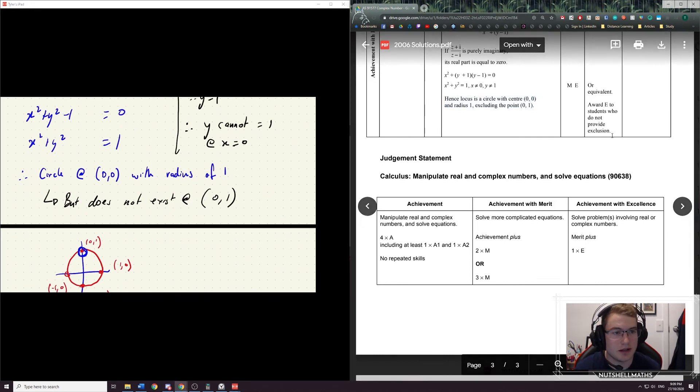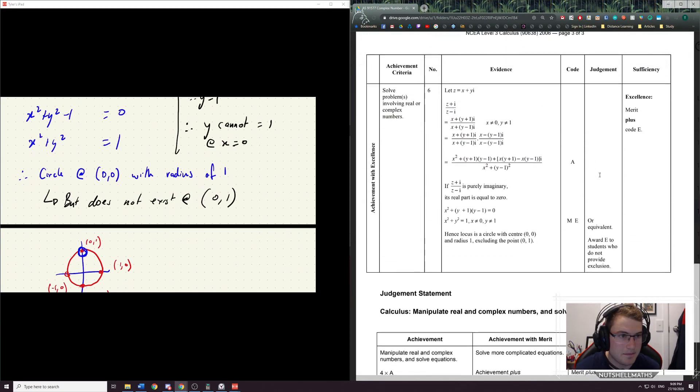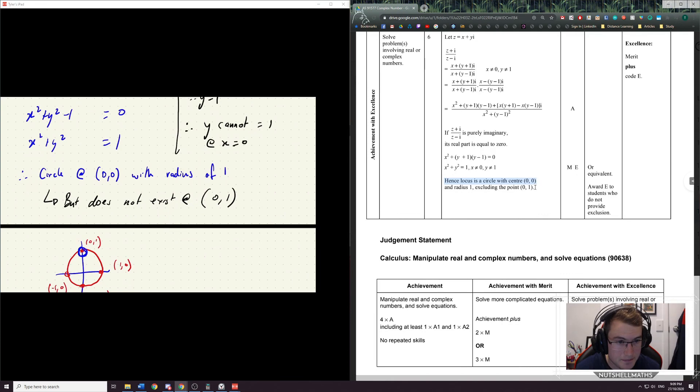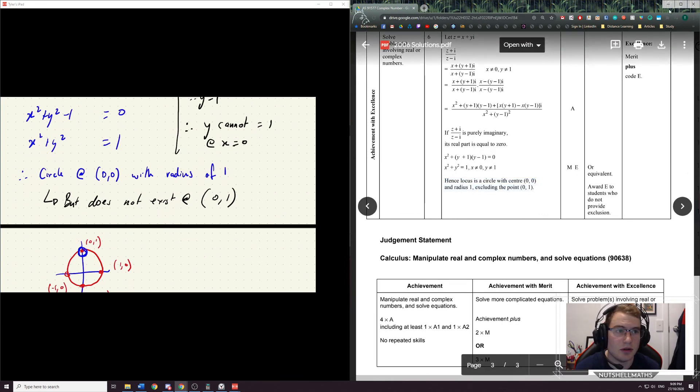Award E to students who do not provide exclusion. Ah. So I would have got E anyway. So I would have got E for this sentence here. But I'm just flexing with this sentence here. Cool. Right. That's us. And there you go.